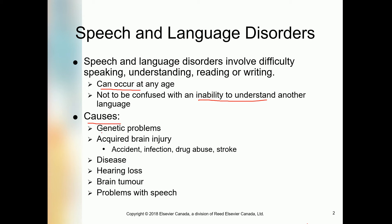The fundamental causes of Speech and Language Disorder involve genetic problems — problems which people inherit from their parents or grandparents, from either the mother's side or the father's side. This is a non-modifiable problem. Another cause is Acquired Brain Injury, ABI, which occurs because of certain accidents or trauma, resulting in a head injury that involves brain injury.